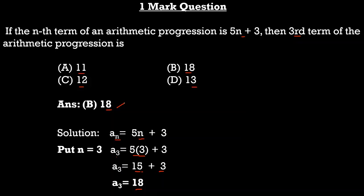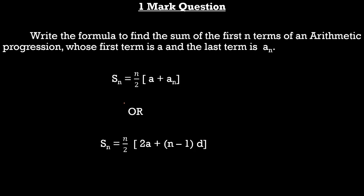This type of question was asked in March 2019 also, so you need to practice such questions. Now moving to the second question, also for one mark: write the formula to find the sum of the first n terms of an arithmetic progression whose first term is a and the last term is aₙ.